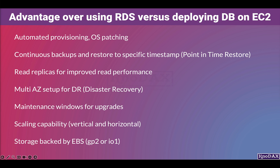RDS database storage is backed by EBS, with both GP2 and IO1 storage options available. GP2 is designed to deliver provisioned performance 99% of the time. If you need more IOPS than GP2 can provide — such as workloads where low latency is critical or better performance consistency is needed — it is recommended to use IO1.